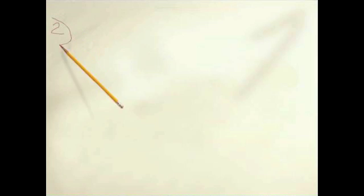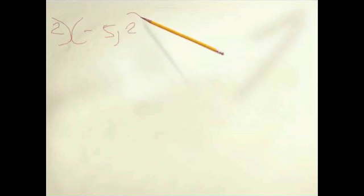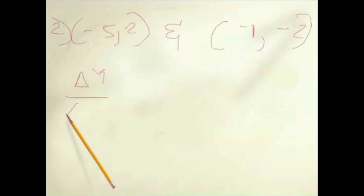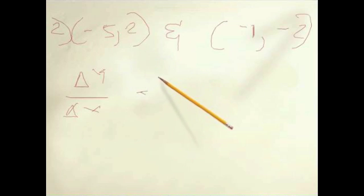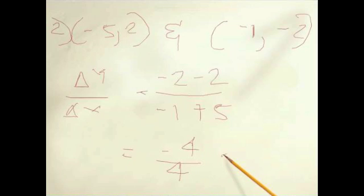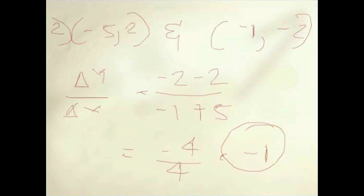So the next problem says the points are (negative 5, 2) and (negative 1, negative 2). Same thing: delta y over delta x equals negative 2 minus 2 over negative 1 minus negative 5, which gives you negative 4 over 4, which you know is negative 1. So negative 1 is our slope.